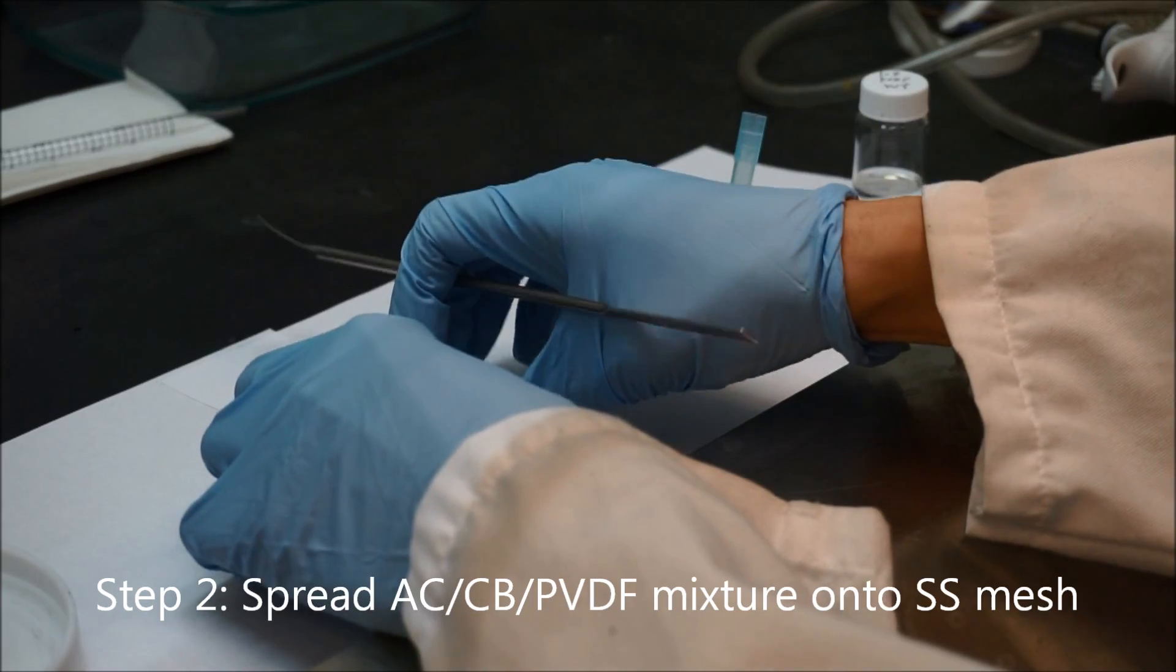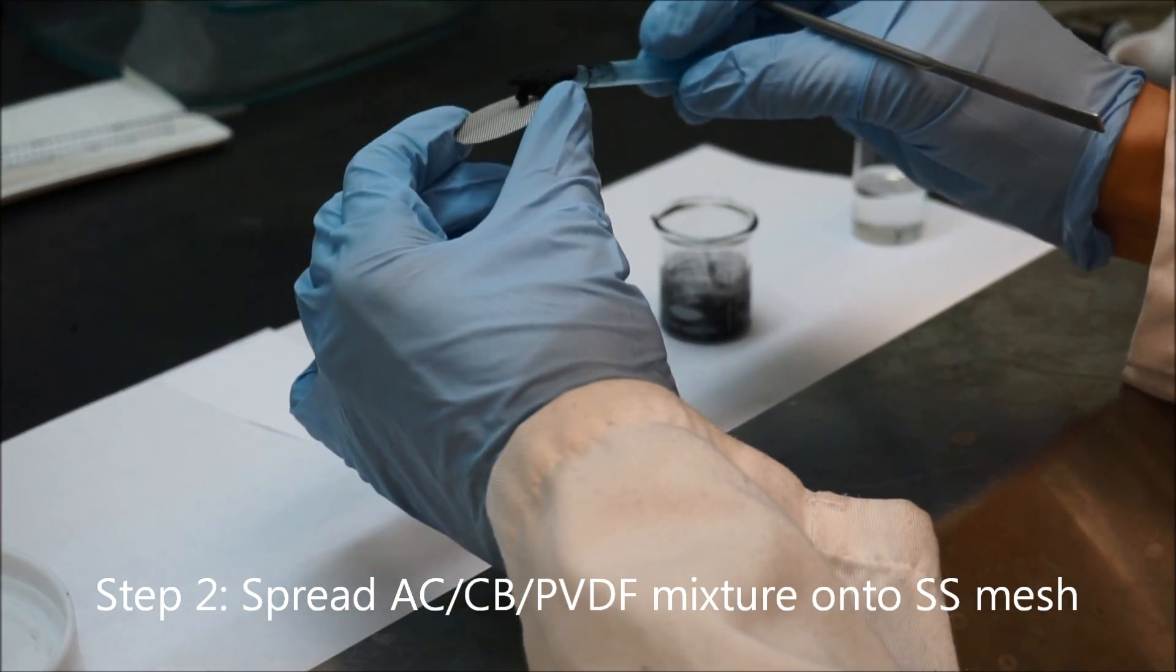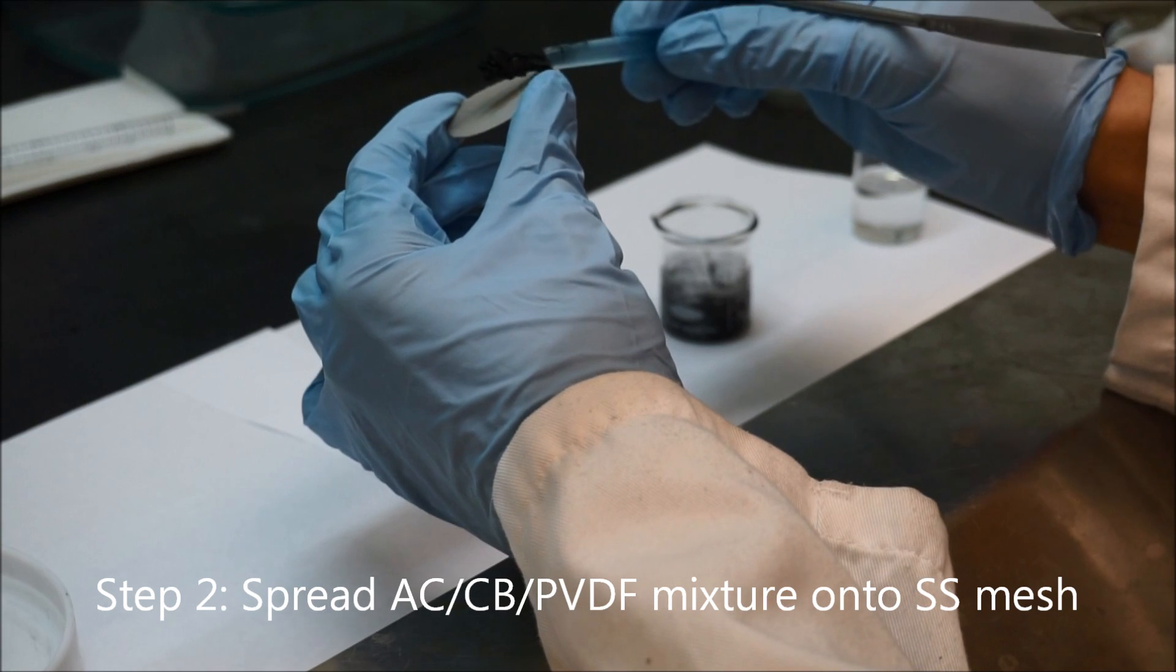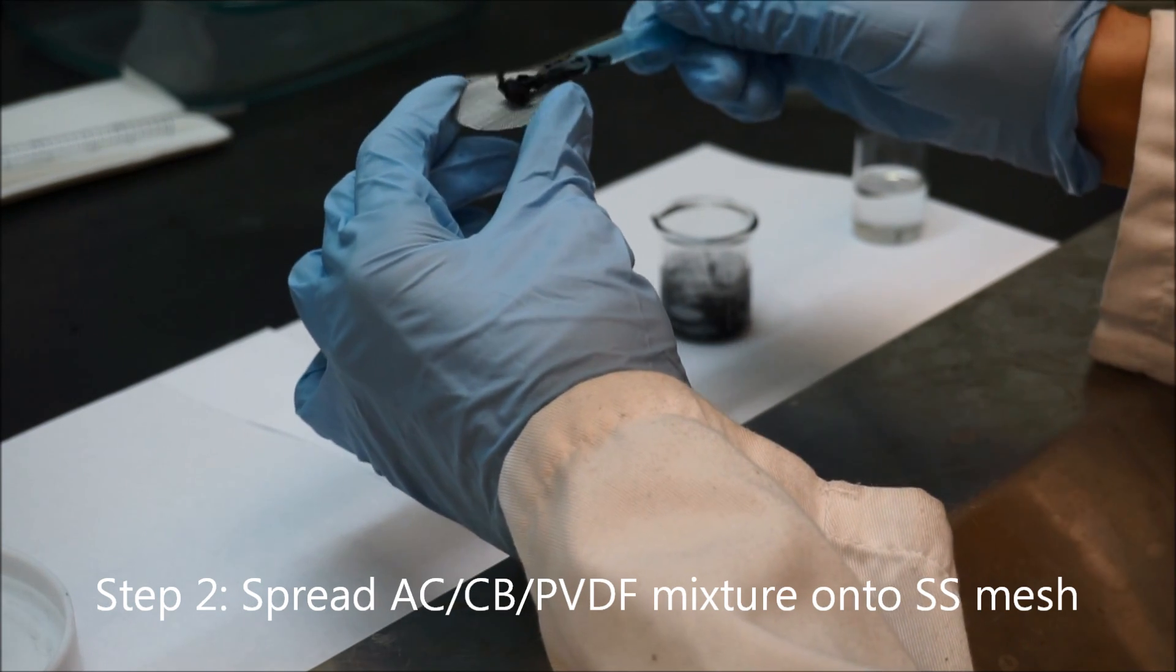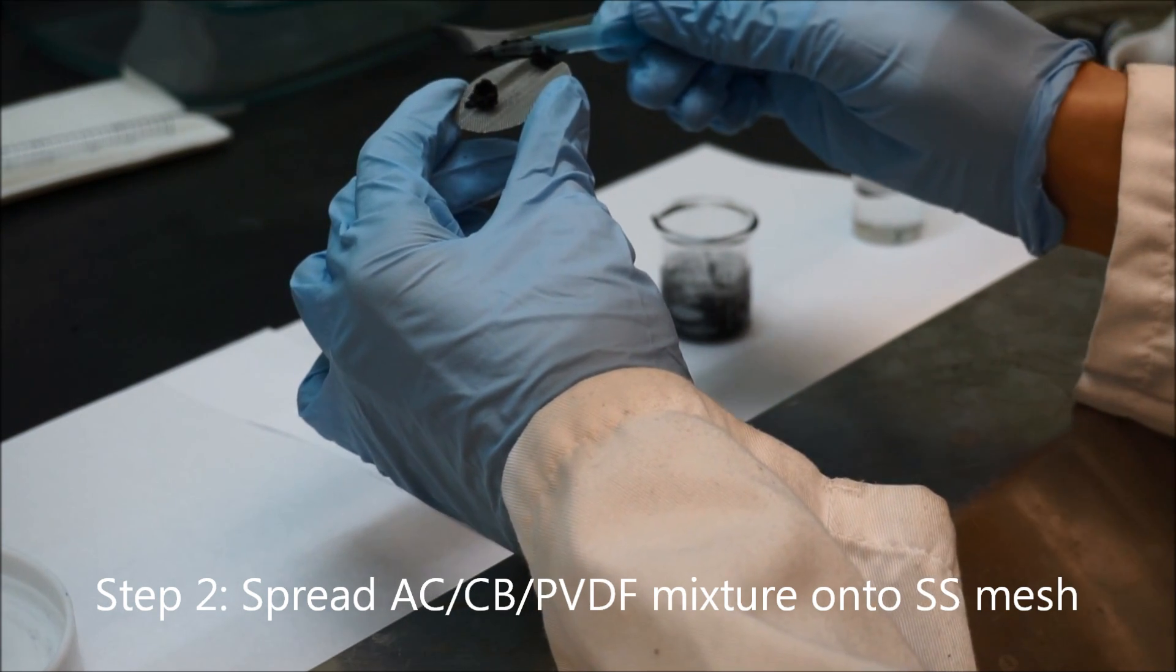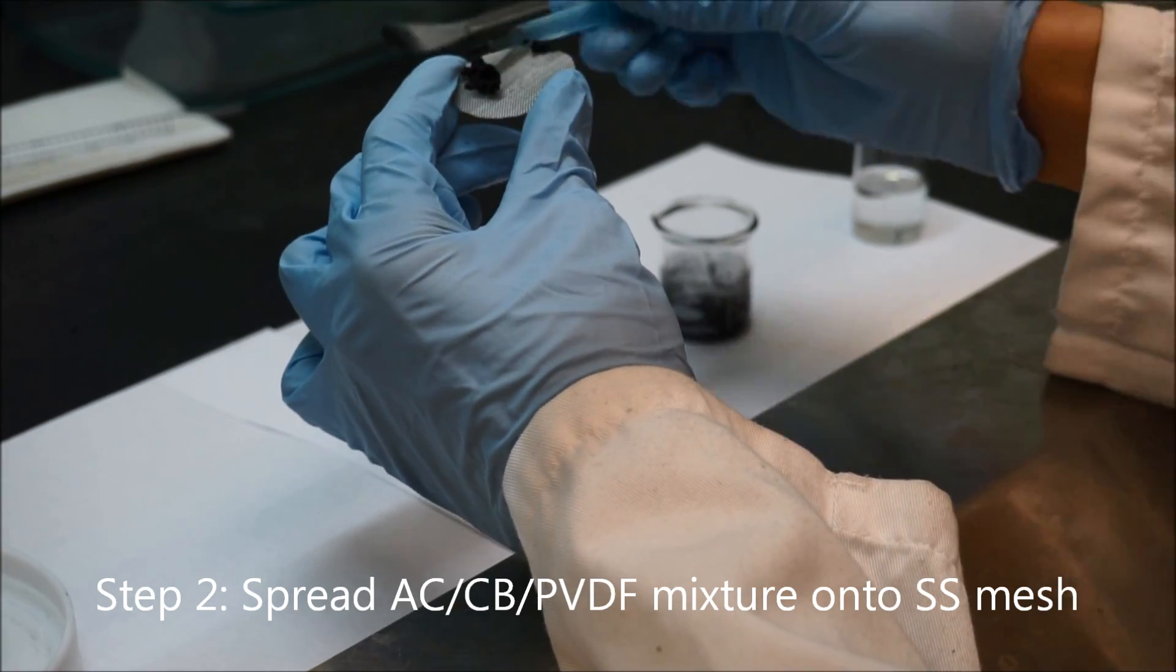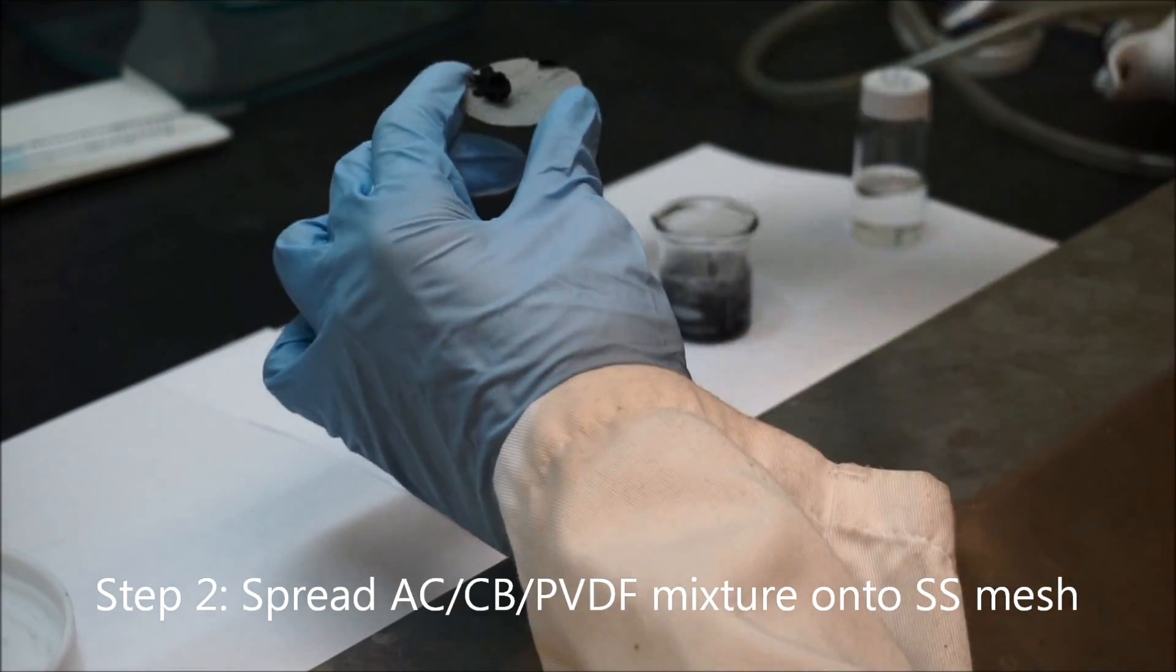Then the second step is to spread the active carbon, carbon black, PVDF mixture onto the stainless steel mesh. Here we use a spoon to quicken this process.